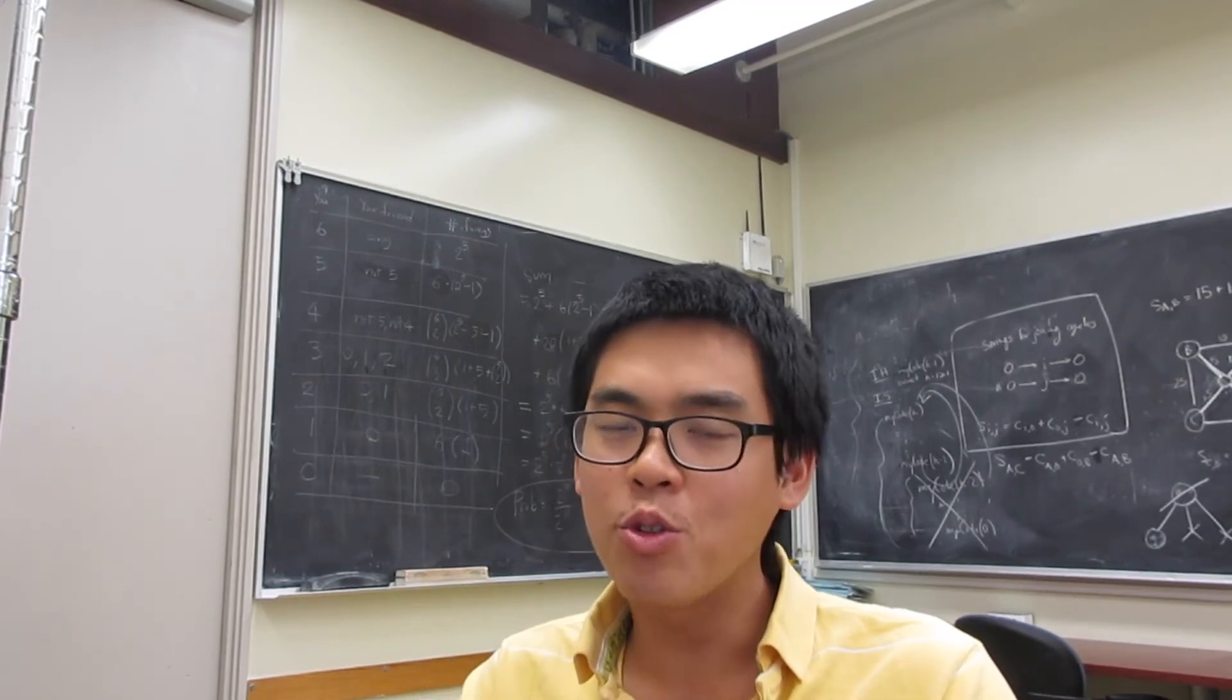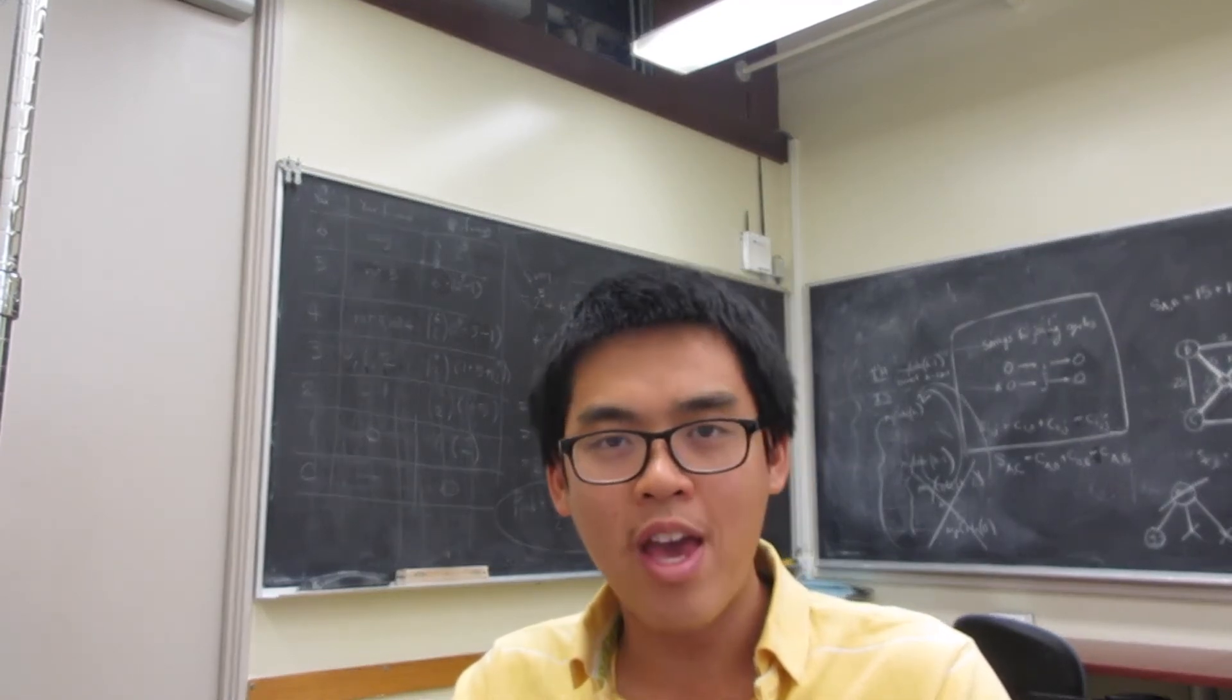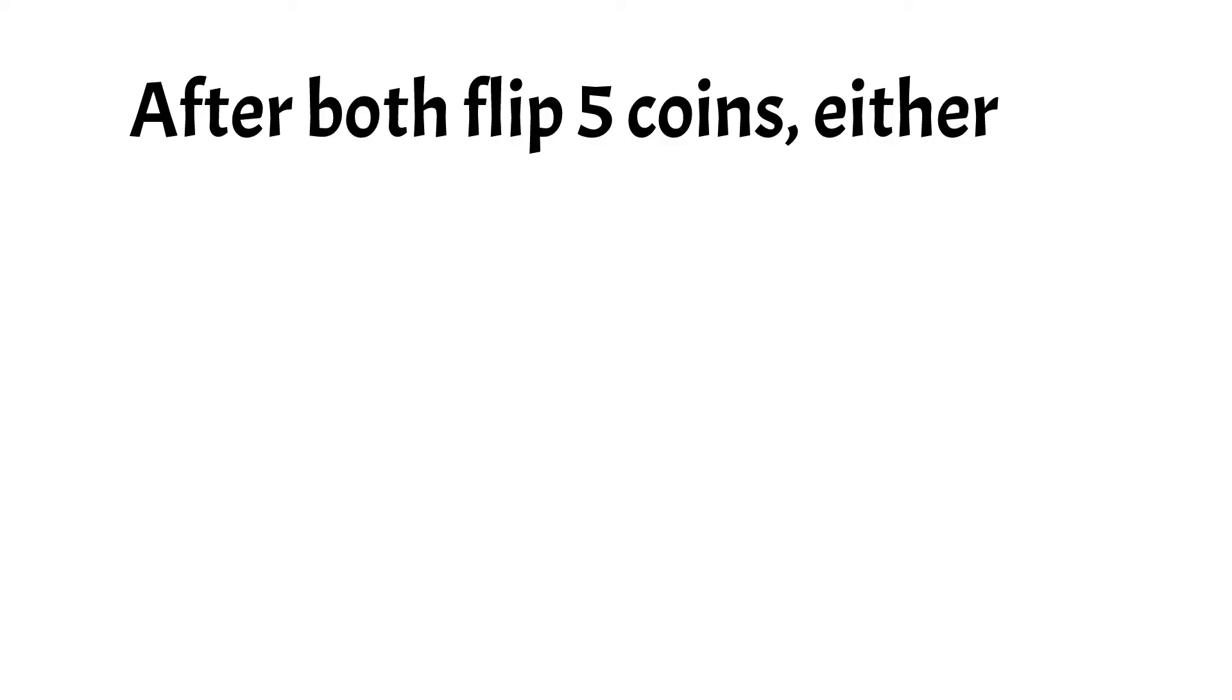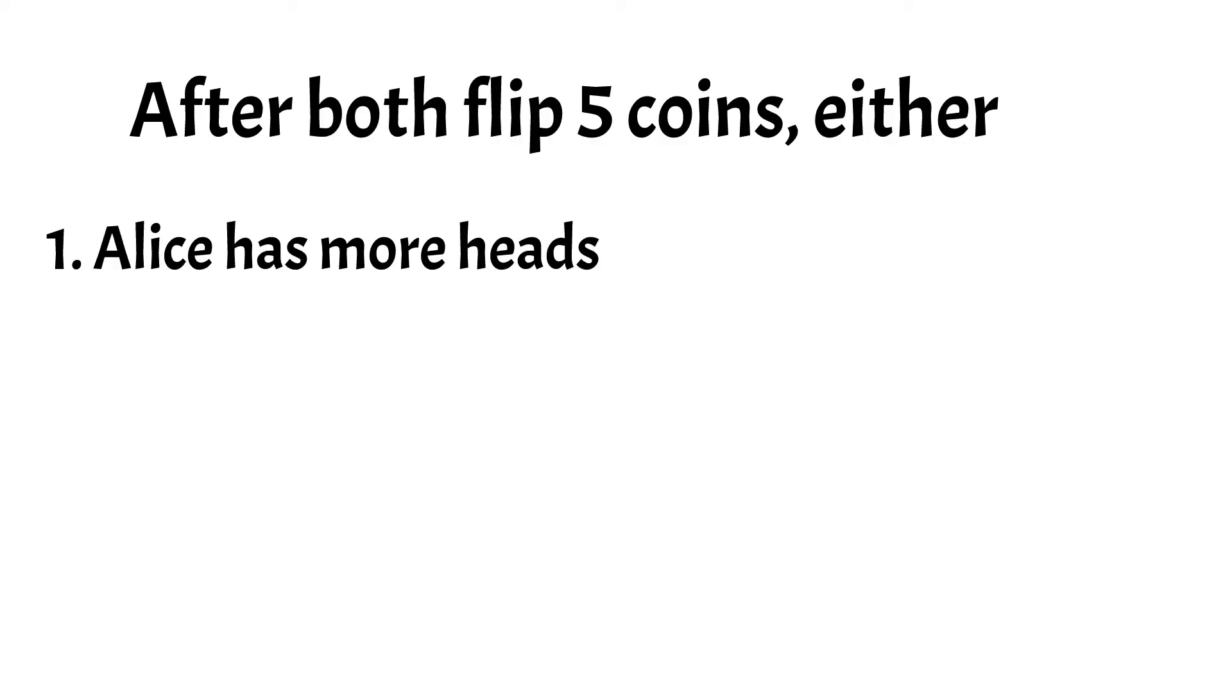Well, to do that, we need to go all the way back to the way I thought about this problem. Alright, so we start off with Alice and Bob each toss five coins. And after that, there are three possible cases. Alice has more heads, Bob has more heads, or they both have the same number of heads.